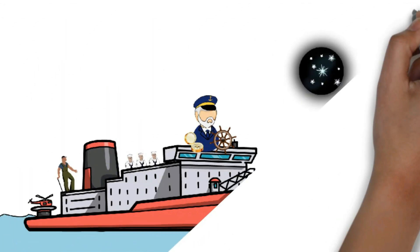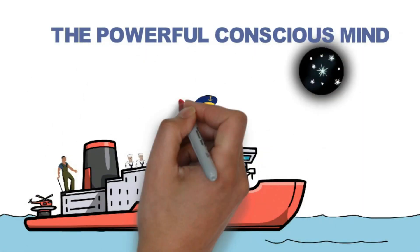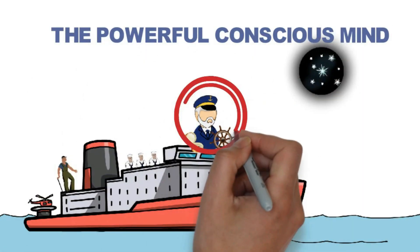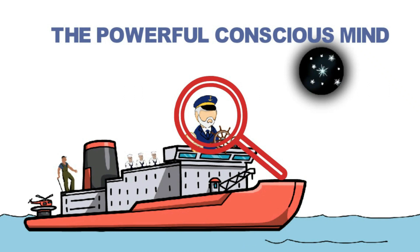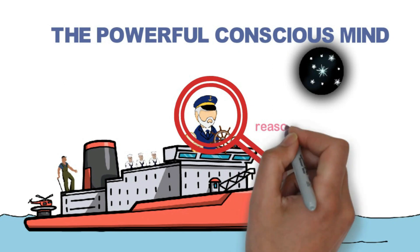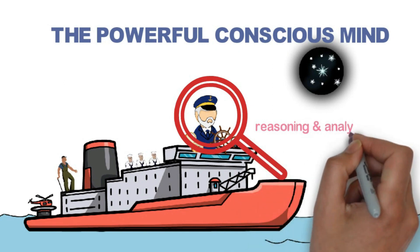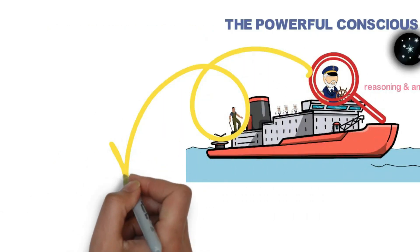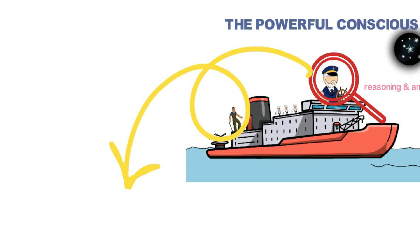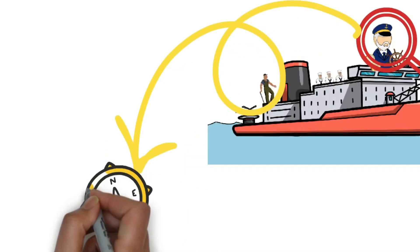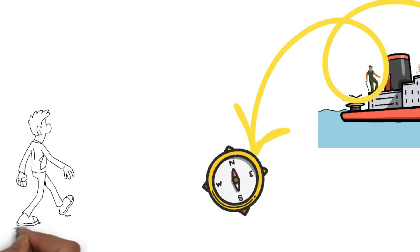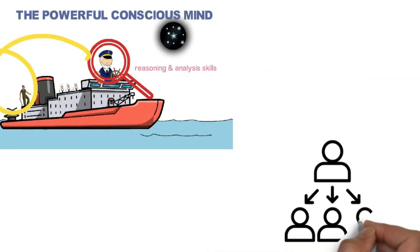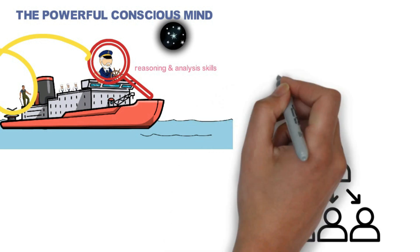Now moving to the most important person on the ship, the captain of the ship, and in our analogy, he represents the conscious mind. Now this is the mind that gives us the ability to use logic and reasoning before we make decisions. Now the reason this guy is the most powerful person on the ship is because he's the only one who has access to the navigational equipment. He can lead us to our destination. Without him, we are lost.